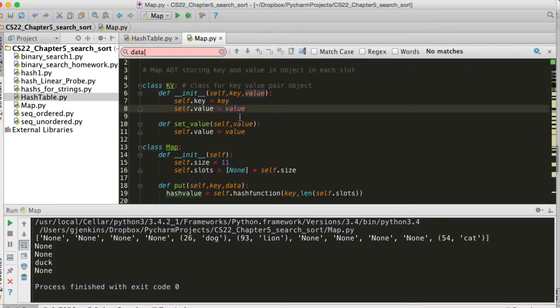So we define a special class up here called KV for key value. And it stores a key and a value. And you can refer to the data in it by just saying whatever that object is dot key or whatever that object is dot value. And if we want to change the value, we call set_value, and it passes in value and changes the value of that object.